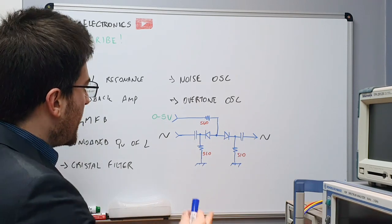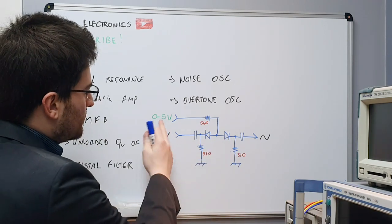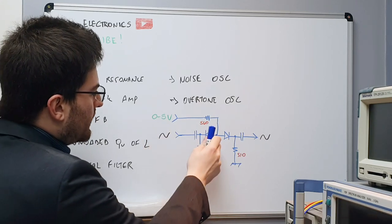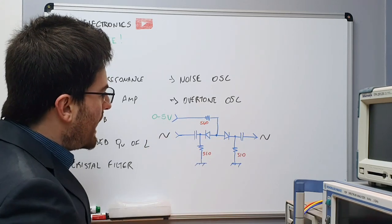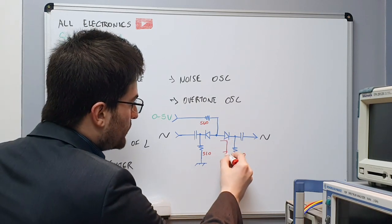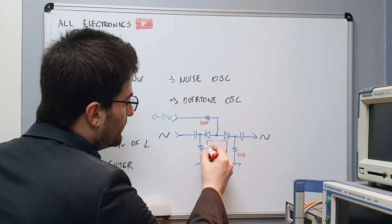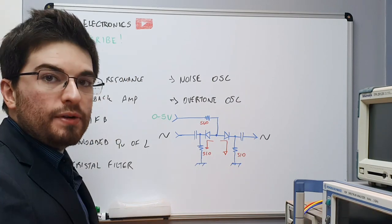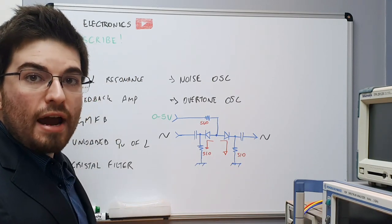So when we apply the forward bias, so here in this example is 5 volts in the middle of the two diodes here, the two diodes will conduct, so we are going to have current in the two diodes, and the dynamic resistance of the diodes will be very low.